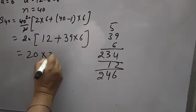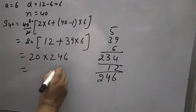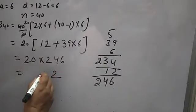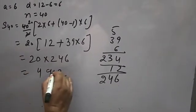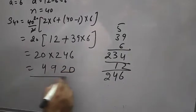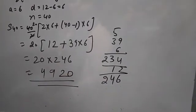So, 20 times 246. Calculating: 6 times 2 is 12, 4 times 2 is 8, then 9, 2 times 2 is 4. This gives us 4920. So, the sum of 40 terms is 4920.